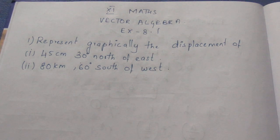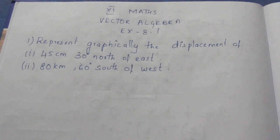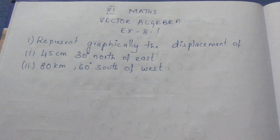Question: Represent graphically the displacement of (i) 45cm, 30 degrees north of east. Second one, (ii) 80 km, 60 degrees south of west.